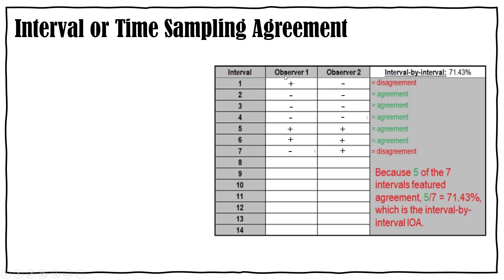So let's look at interval one. Observer one said the behavior occurred, observer two did not, so we have a disagreement. Interval two, both observers said the behavior did not occur, so we have an agreement. Interval four we have an agreement, interval five we have an agreement, interval six we have an agreement. Interval seven, observer one said the behavior did not occur, observer two said the behavior did occur, so we have a disagreement. Basically what you're going to do is put the number of agreements over the total number of intervals, or the total numbers of agreements and disagreements, and multiply it by 100.